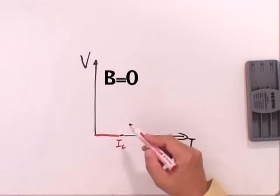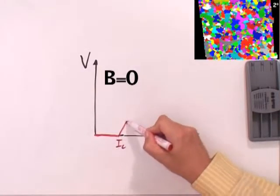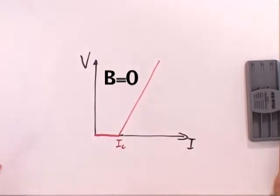And above IC, the IV curve increases linearly like a resistor.